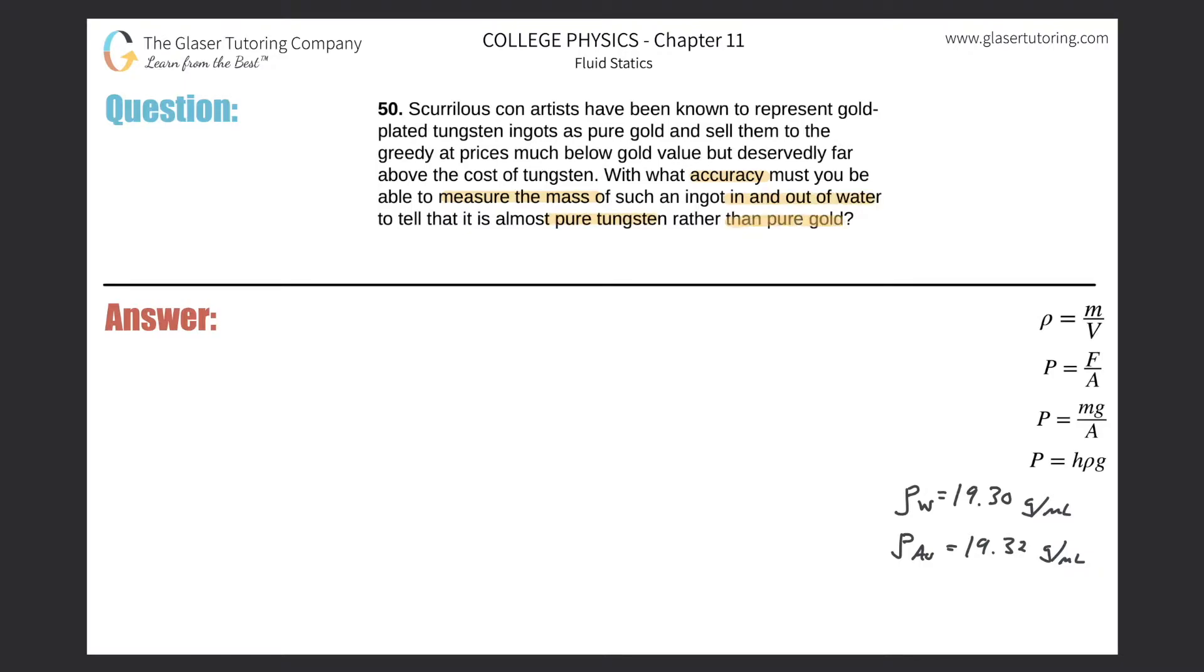Alright, so basically what this question is asking is with whatever instrument you're using, what decimal place should your uncertainty lie? Should it lie in the tenths, hundredths, thousandths, or ten-thousandths? That's the question.